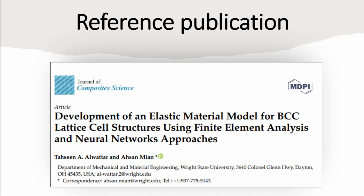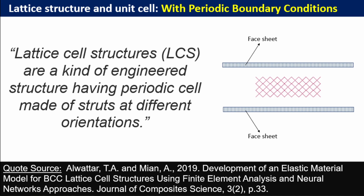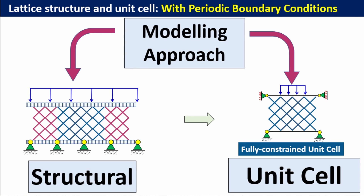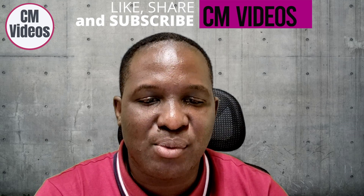The publication we're going to work with — if you want a more holistic 3D video I've linked a related video in the cards. So what are lattice composites? These are engineered materials with a periodic cell structure. The periodic cells are made of struts with different orientations. Typically you have a sheet on the top and bottom, with a lattice structure in the center. The modeling approach will be either a full structural model or a representative volume element unit cell approach.